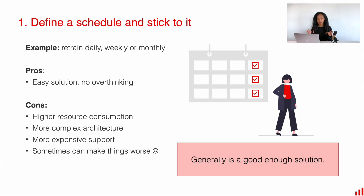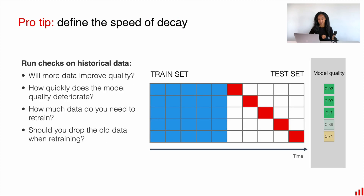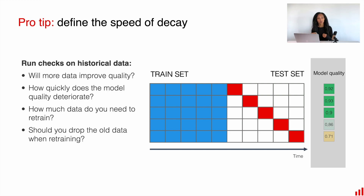But in any case, generally this is a good enough solution and at least a very good start. Luckily, I have some tips for you. You can decide on the optimal schedule using historical data. If you are lucky enough to have a lot of historical data, you can benefit from it. The idea is that you can run quite a lot of experiments to define things like the speed of model decay and the amount of data you need to retrain the model.